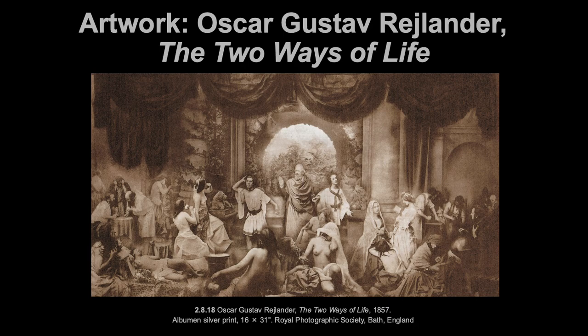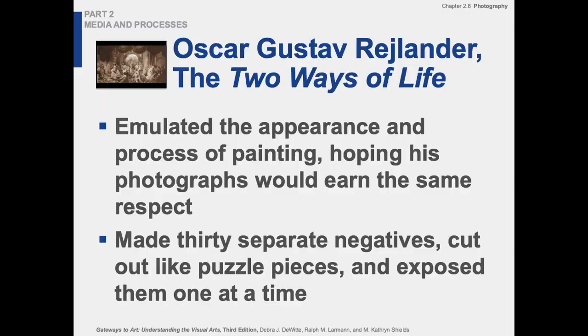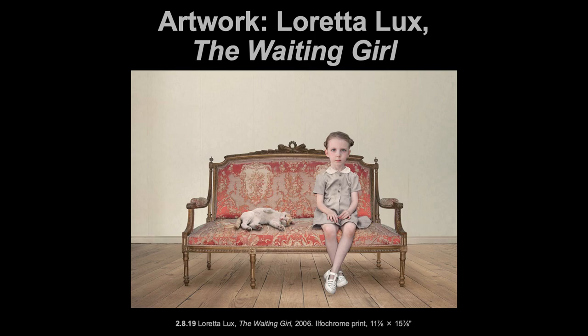Some photo artists still do this kind of thing today. Even when we think about Photoshopping — putting a different head on a different body — that kind of thing happens. But that wasn't really his thought. His idea was 'Two Ways of Life,' sort of a religious painting. He combined all these images to make one image, printing it on a negative and perhaps distributing multiples. He's emulating the appearance and process of painting, wanting to get that same respect. He cut them out like puzzle pieces and exposed them onto the paper one at a time.